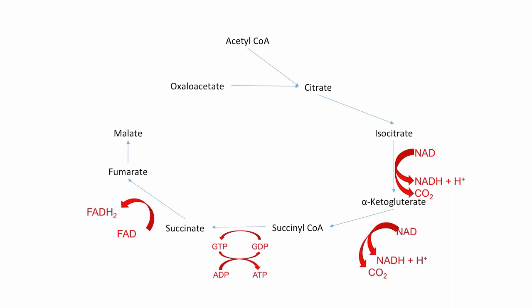The next step is the conversion from fumarate to malate. This process does not create any energy, so we are skipping this step for another video. The last step is converting malate to oxaloacetate. This step also makes NADH and H+; however, it does not need oxygen to make this like the other two conversions of NAD.